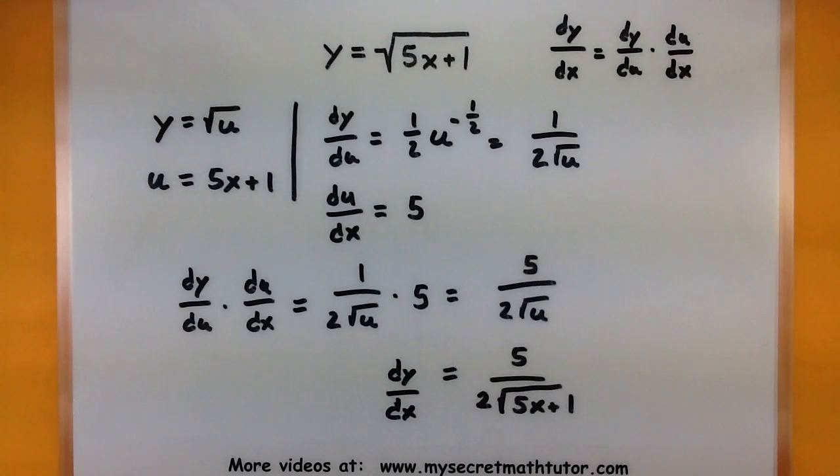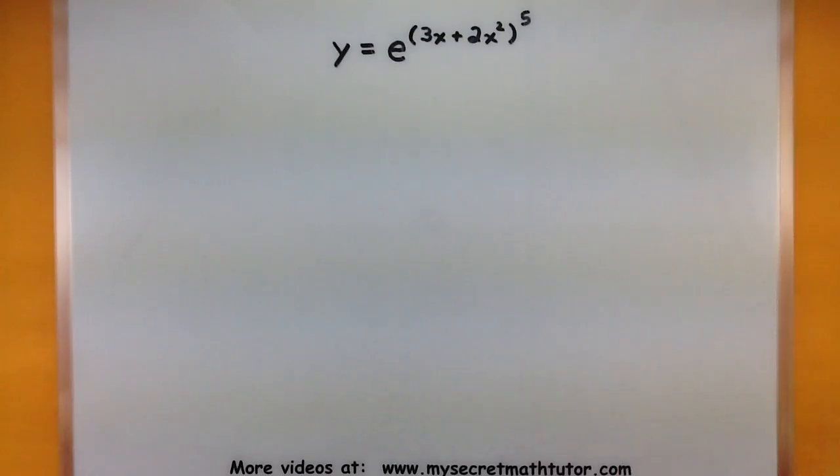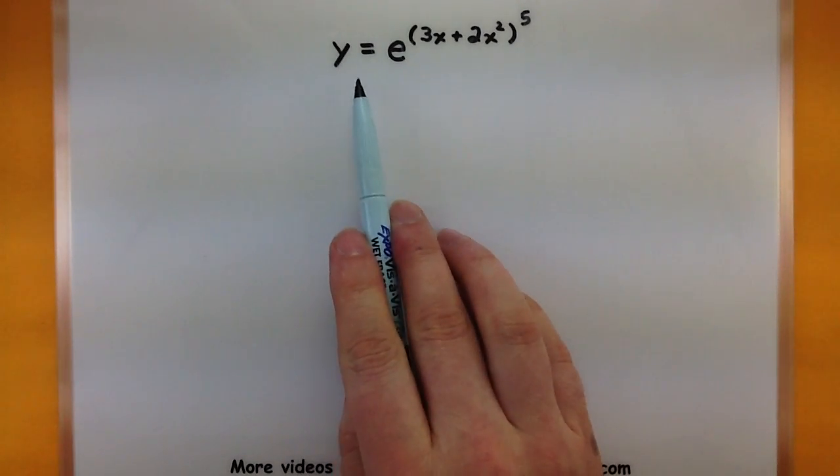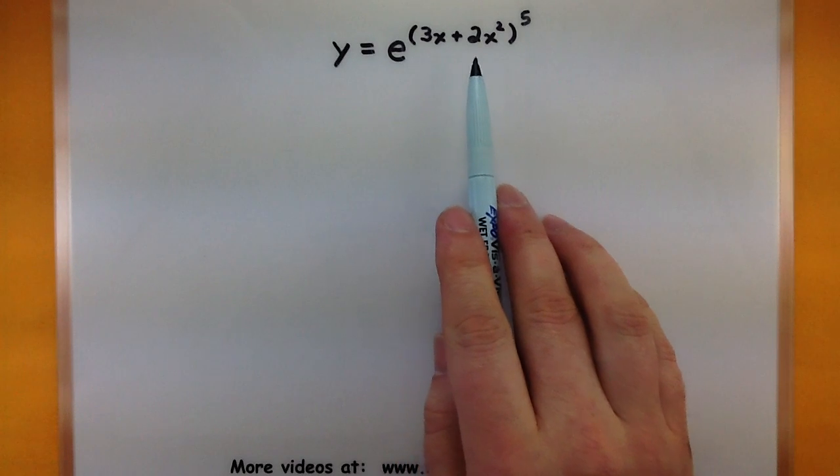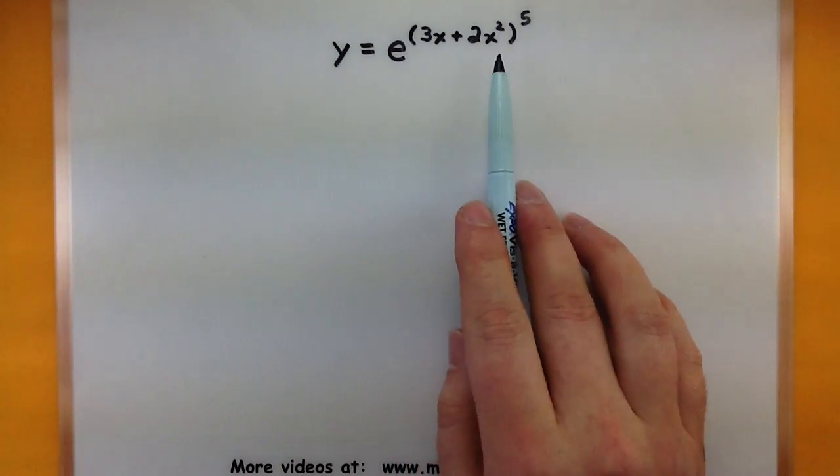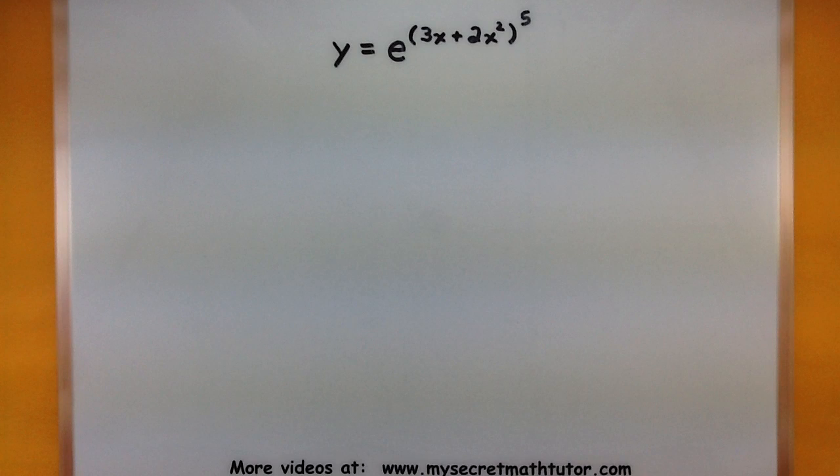Alright, let's try this one more time with something that has a few more pieces to it, so you can see how this whole process works one more time. Okay, this one's a little bit more complicated, and we essentially have more functions packaged up inside of other functions. So this is y equals e to the 3x plus 2x squared, and all of that is raised to the fifth power, so we've got a lot going on there.